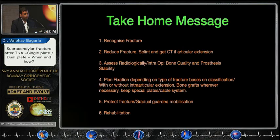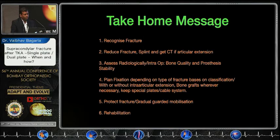The take-home message: recognize the fracture, reduce it, splint it, get a CT scan to visualize any articular extension, assess radiologically and interpret the bone quality and prosthesis stability, and plan fixation based on the fracture classification — whether with or without intra-articular extension. Use bone graft where necessary. In most cases with comminution, you must bone graft using either allograft or autograft. If the patient can afford it, use BMP, because you are giving one shot and trying to minimize failures. Then protect the fracture and allow gradual guided mobilization.